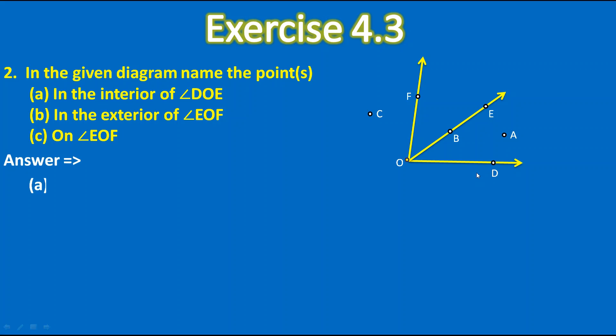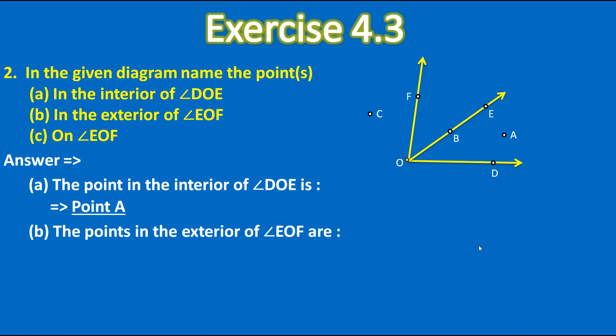So the point in the interior of angle DOE is point A. Okay next is in the exterior of angle EOF. The angle EOF this is the angle EOF and they have told us to write exterior. So exterior is C is present, D is present and A is present. So the points in the exterior of angle EOF are point A, point D and point C.